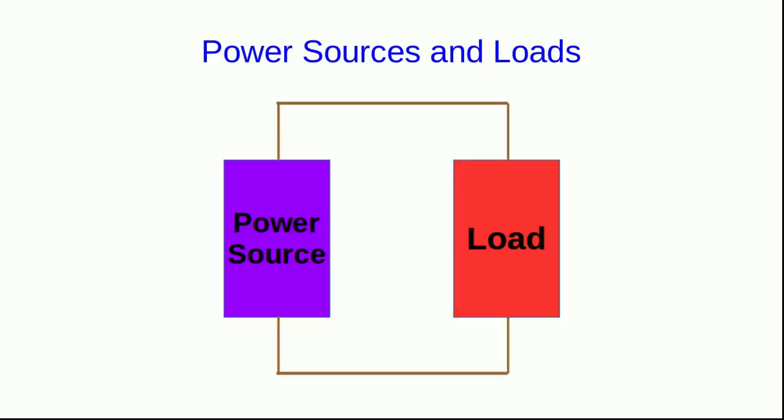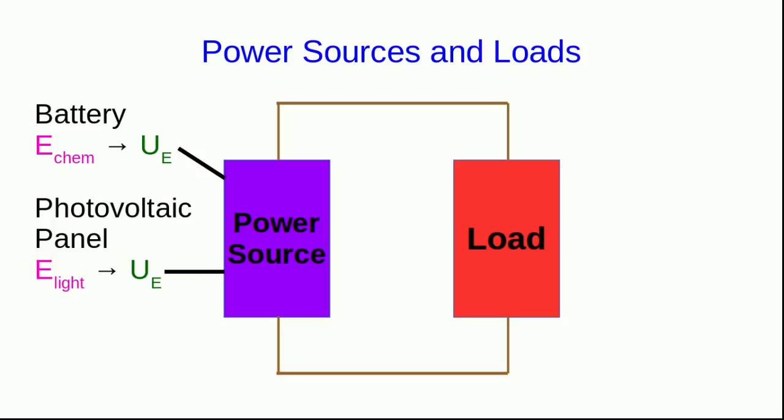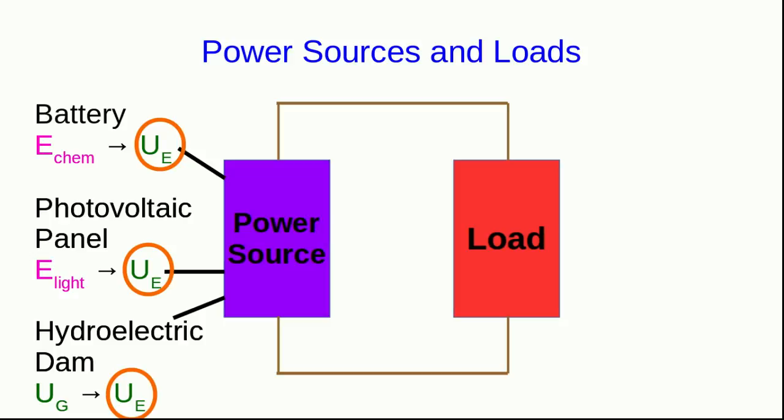A useful piece of terminology is power sources and loads. A circuit generally always consists of a power source and a load. The power source could be any number of things. It could be a battery converting chemical energy into electric potential energy or perhaps a generator doing the same conversion but by a different means. It could be a photovoltaic panel converting energy carried by light into electric potential energy. It could in a very large circuit be a hydroelectric dam converting gravitational potential energy into electric potential energy or any number of other possibilities. The common theme however is that all of them are turning some form of energy into electric potential energy.